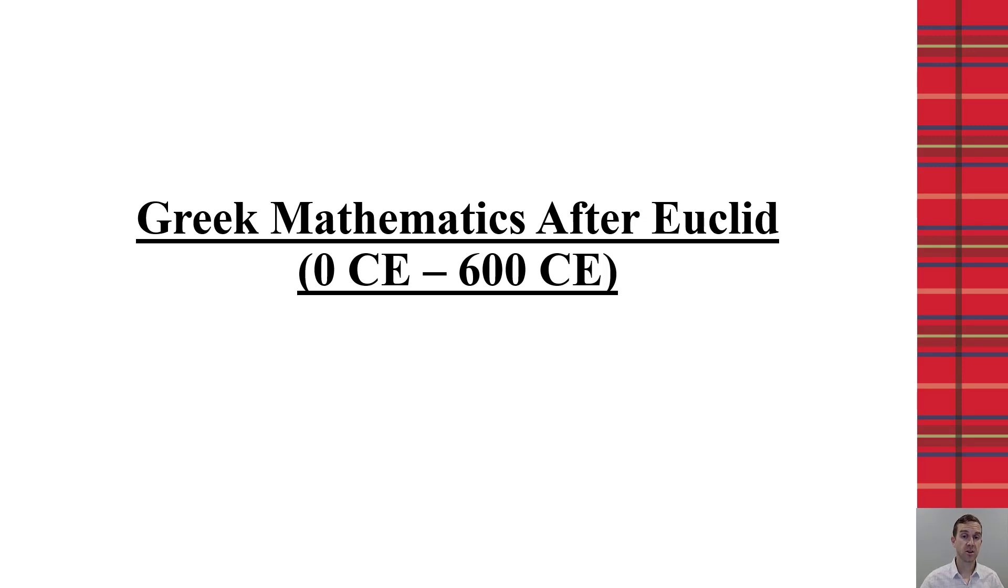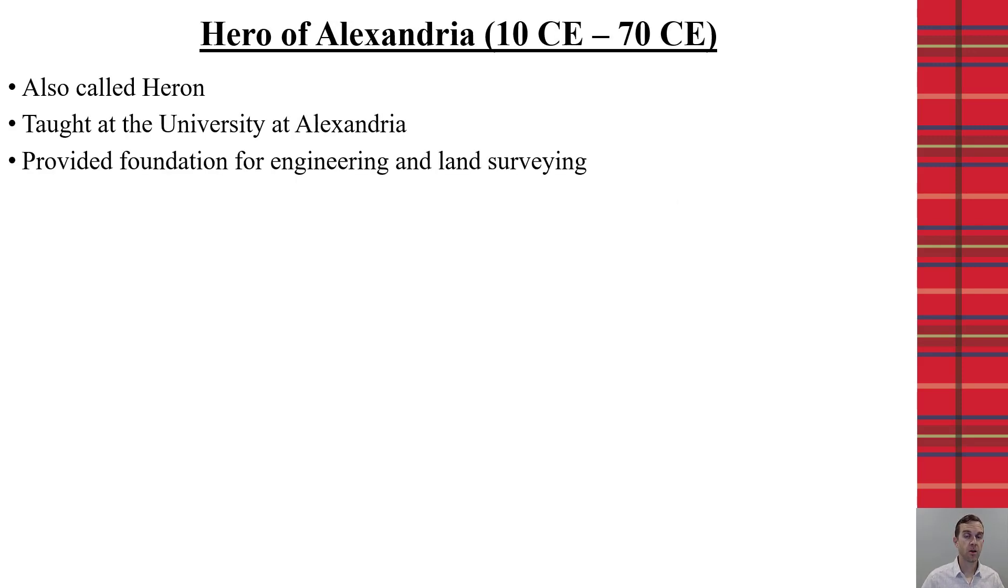In this video, we'll discuss Greek mathematics starting at the turn of the millennia. Now, one of the more famous mathematicians of that time was Hiro, or Heron, of Alexandria.